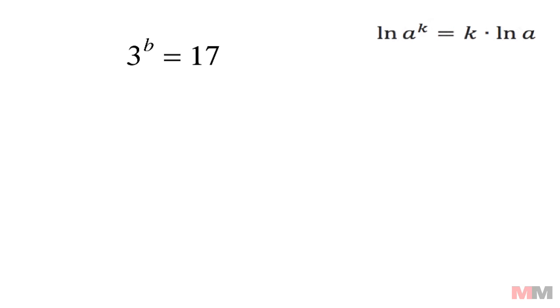If I take the natural log of both sides, the natural log of 3 to the b power equals natural log of 17. The same rules of an equation applies - whatever I do on one side I can do on to the other, so you can do that, that's legal.